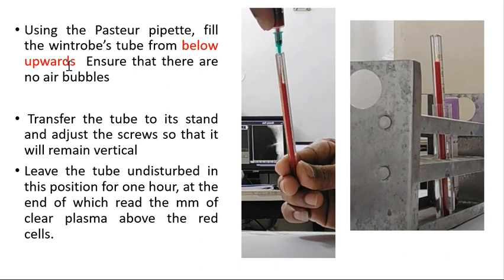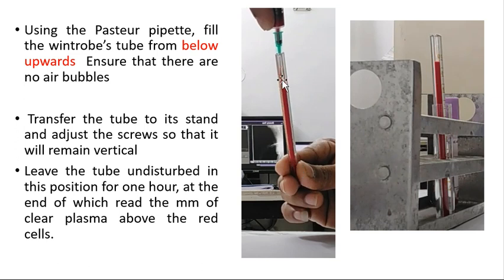Next, fill the Wintrobe tube using a Pasteur pipette from below upward, ensuring there are no air bubbles. Fill it to the 0 mark — since 0 to 10 downward is used for ESR. If no Pasteur pipette is available, slowly pour blood from downward to upward using a needle. Once filled, transfer the tube to its stand and ensure it is perfectly vertical — this is very important.